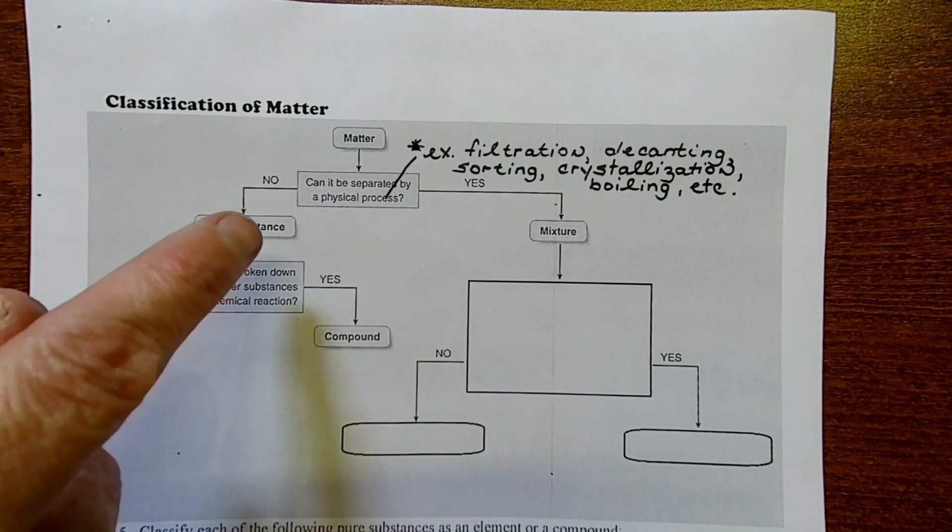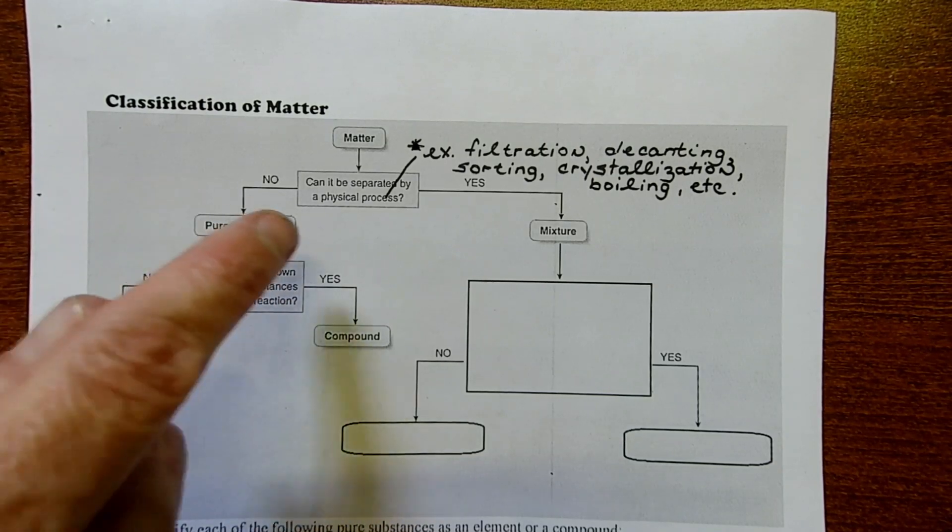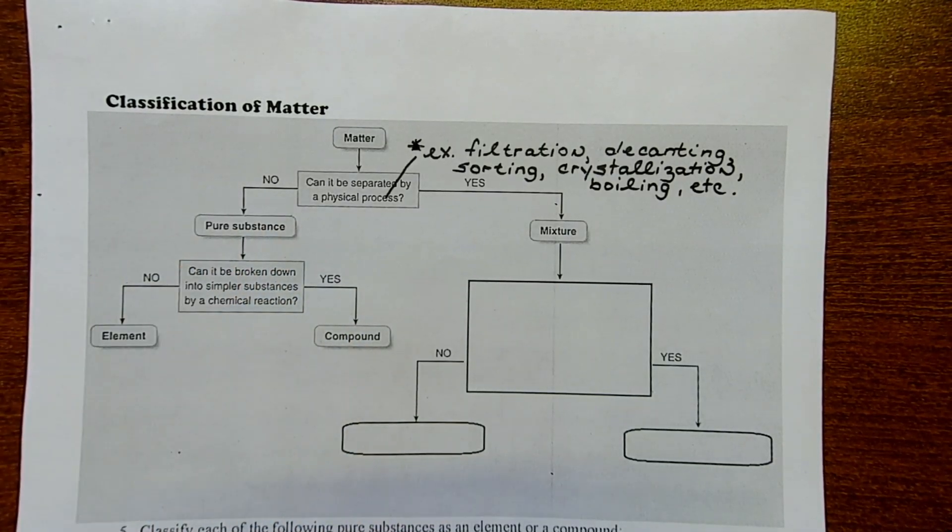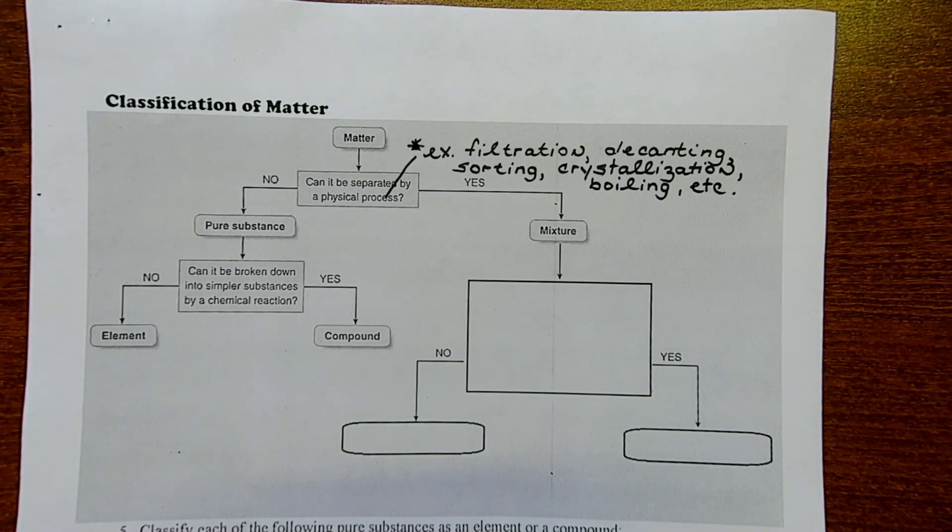The first question in this flowchart is: can it be separated by a physical process? That begs the question, what is a physical process? It goes back to the definition of physical changes. A physical process maintains the identity of the substance, it's easily reversible, and there's no bond breaking or bond forming in physical separation processes.